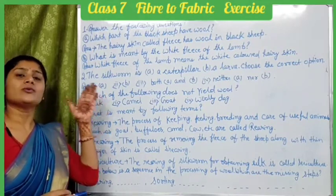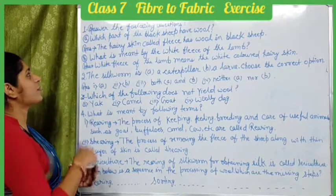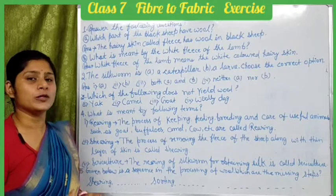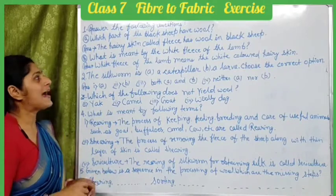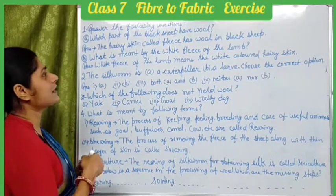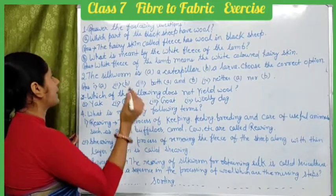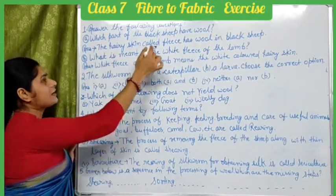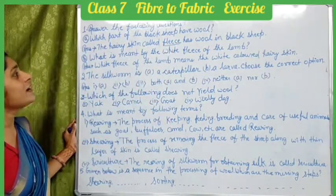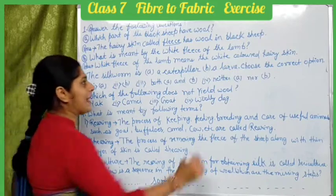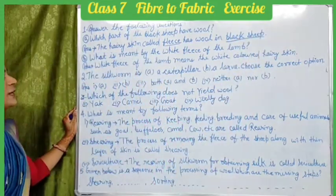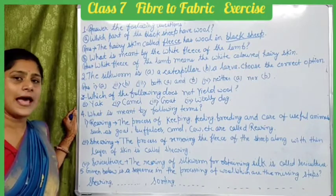The first question related to these poems is: which part of the black sheep has wool? The next question from the poems is: what is meant by the white fleece of the lamb?